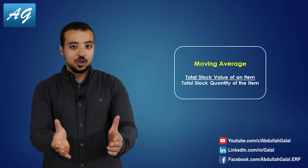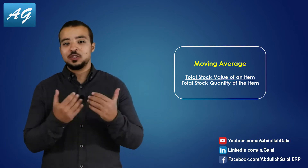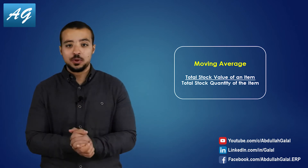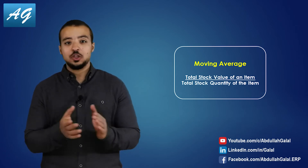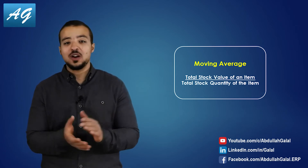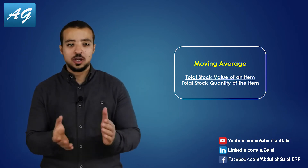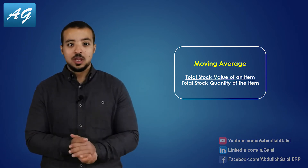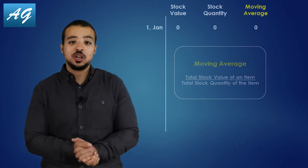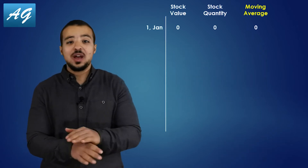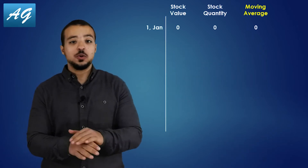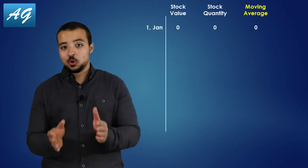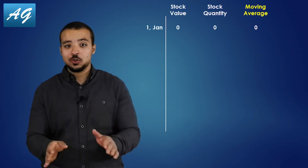For example, let's assume that we are a company that only buys and sells chairs. Currently, we only have one product, which is Chair X. On the 1st of January, we have zero stock, so the stock value is zero and the stock quantity is also zero.